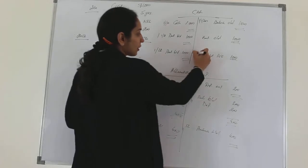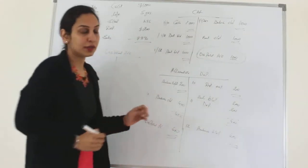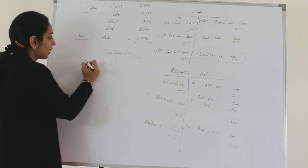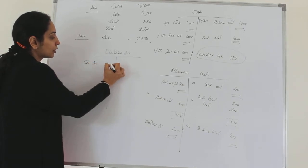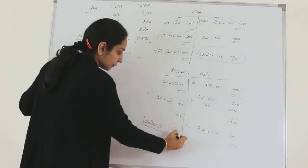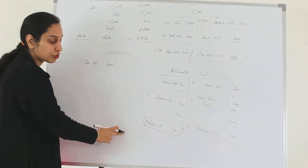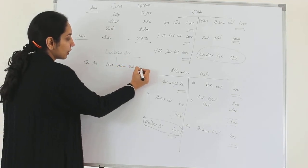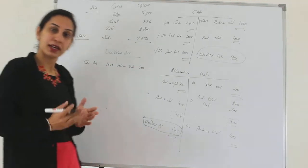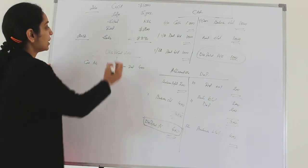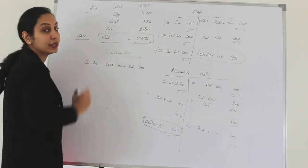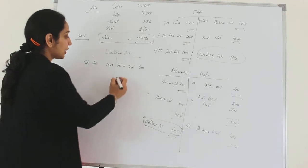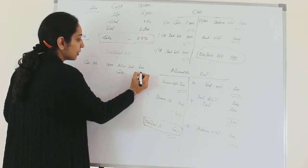In my car account we transferred the balance to the disposal account. That means the car value of $1000 will come on the debit side of the disposal account. Then another entry we made was from accumulated depreciation — so here we shall be showing accumulated depreciation of $400 on the credit side. So these two entries are now in the disposal account. Then, we said that we will be selling an asset for $870. That means this amount is cash, so we will be showing cash here as $870 on the credit side.